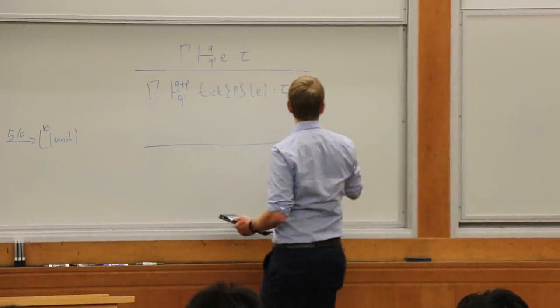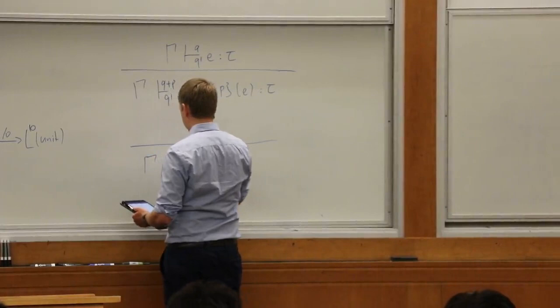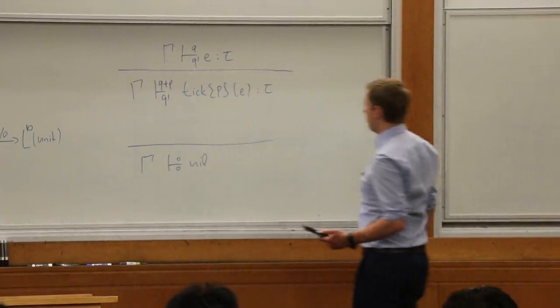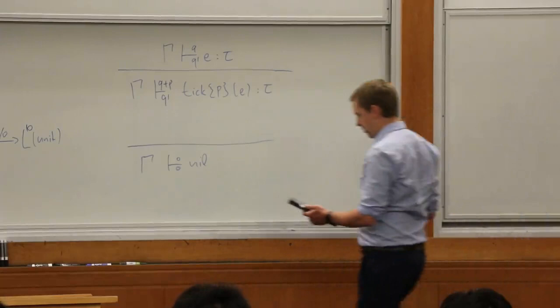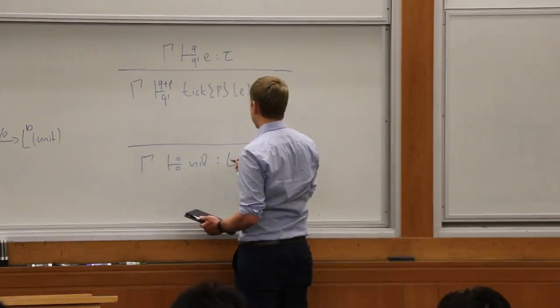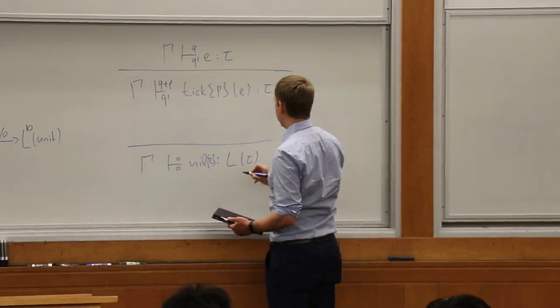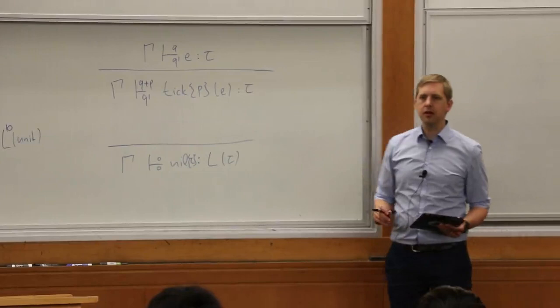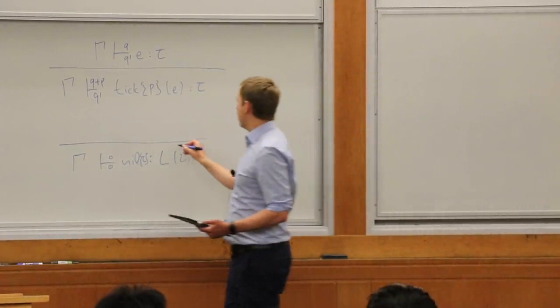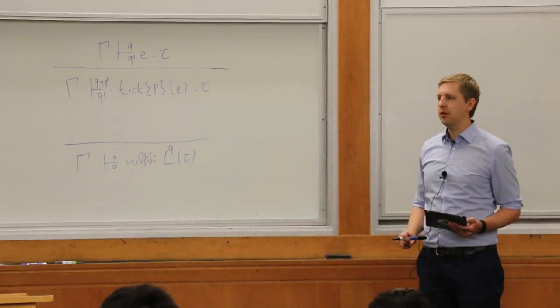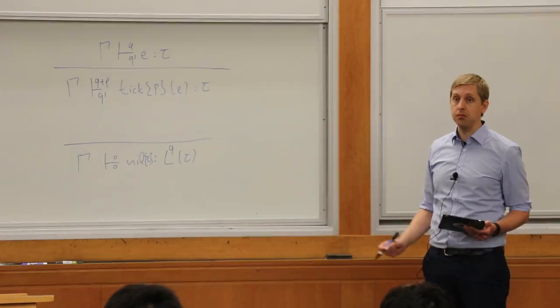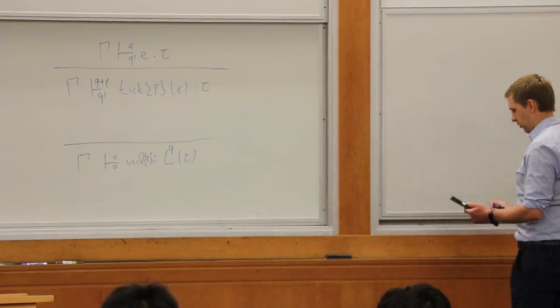Now the list rules. The nil rule isn't too bad — we are very restrictive and say we have to have zero potential, and afterwards we still have zero. The resulting nil has some list type Lq(tau). Nil has always this annotation. Nil has length zero so it has always zero potential, but we can add an arbitrary Q to the list annotation and that's sound — we're not creating potential out of nowhere since it has potential zero.